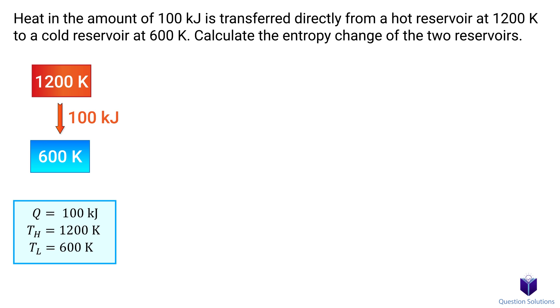Let's focus on the hot reservoir first and figure out its entropy change. For that, we can use this equation. So for the hot reservoir, it transfers 100 kJ of energy. You can think of it as losing 100 kJ of energy, so our QH is negative. Solving gives us the change in entropy for the hot reservoir.